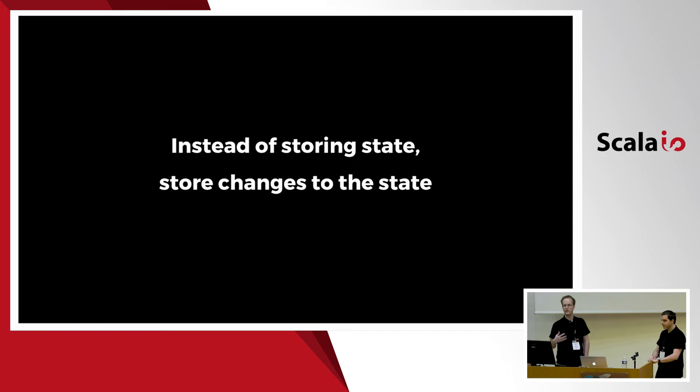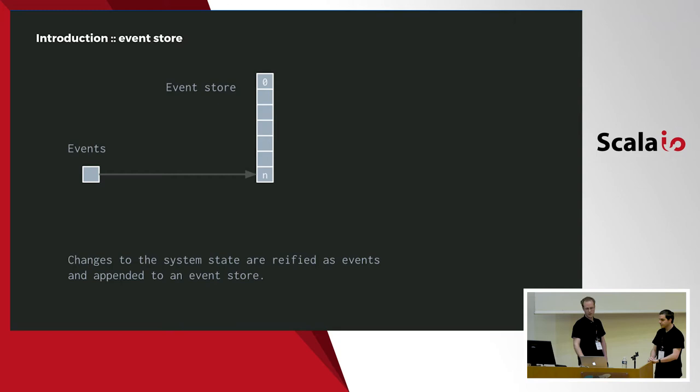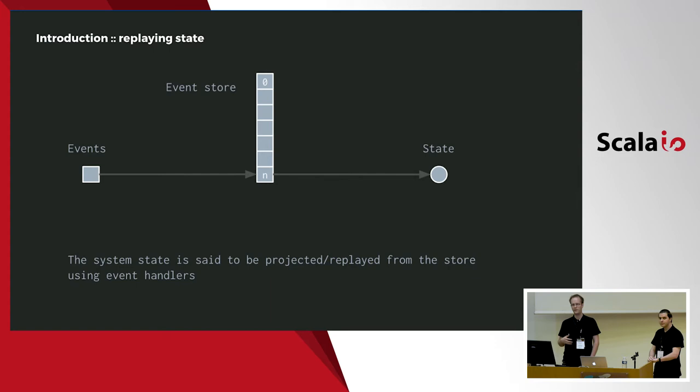The idea behind event sourcing is actually very simple. Instead of storing the current state of the system, we just store changes to that state. We reify any modification of the system in the form of events and then store those events in some journal — sometimes called a store or a log. When we want to know the current state of the system we just replay those events to compute a new state. The code which does this is called an event handler.